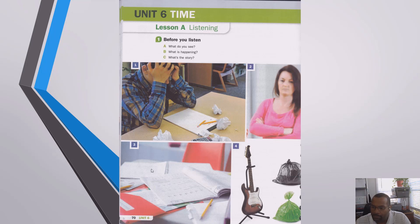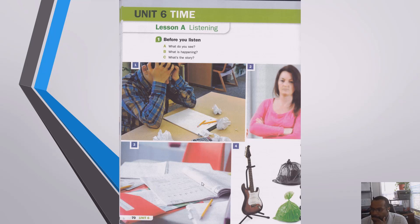Let's look at number three. Picture three looks like some school work and a school book or a textbook — it could be math. Yeah, this looks like a math book. And in picture four, we have what looks like garbage bags — a black garbage bag and a green garbage bag. And then we have a guitar. It looks like an electric guitar on a stand.